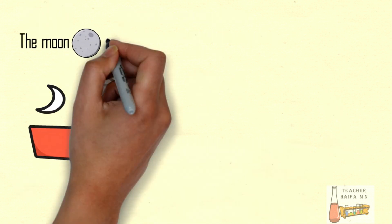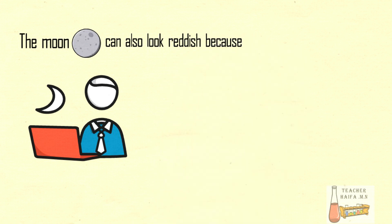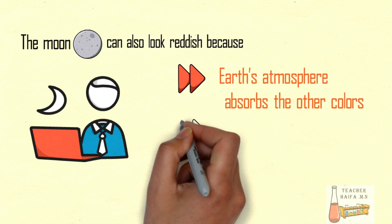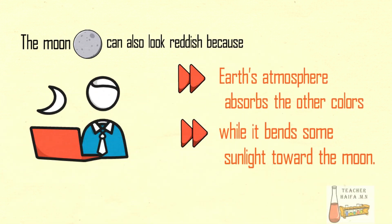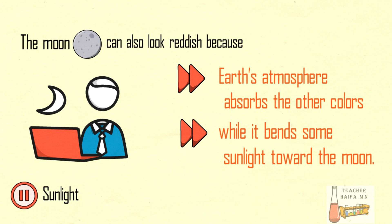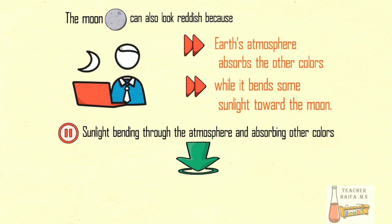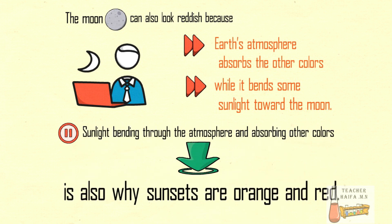The moon can also look reddish because Earth's atmosphere absorbs the other colors while it bends some sunlight toward the moon. Sunlight bending through the atmosphere and absorbing other colors is also why sunsets are orange and red.